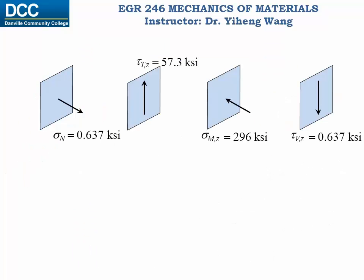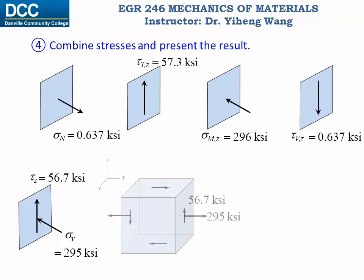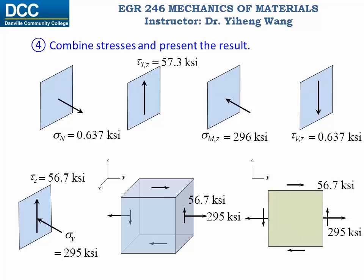Now we have determined all stresses at point C caused by the different internal reactions. We combine them by adding normal stress components and adding shear stress components. Note that the two normal stress components are in opposite directions, and the two shear stress components are also in opposite directions. We represent the result on the volume element, keeping in mind that normal stress must be in equilibrium and shear stress has the complementary property. All six stress components are planar, so we can reduce this to a planar state of stress.